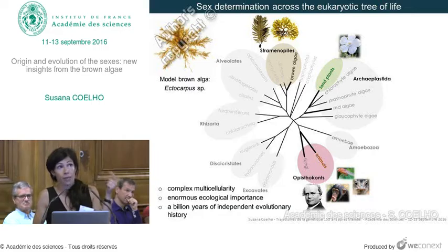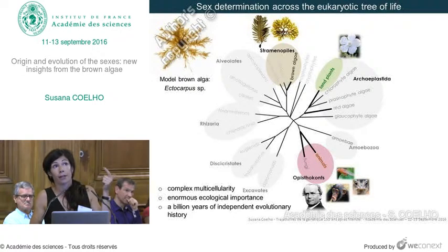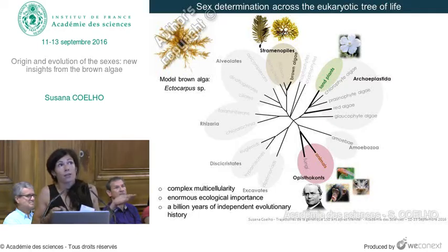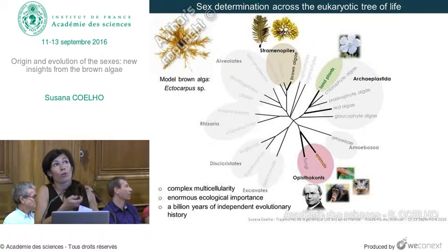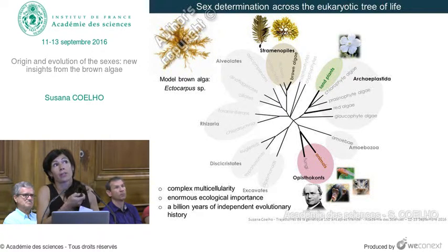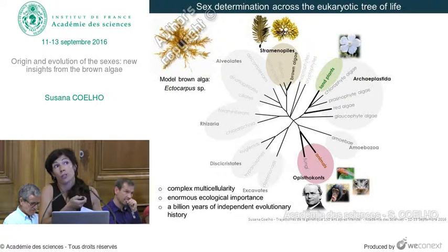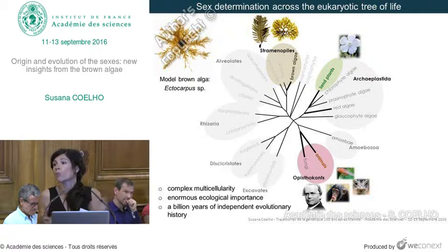These five groups with complex multicellular patterns are animals, fungi, land plants, red algae, and brown algae. We know very little about developmental patterning, sex chromosome evolution, or really anything about brown algae and red algae — these are groups that haven't been looked at much.